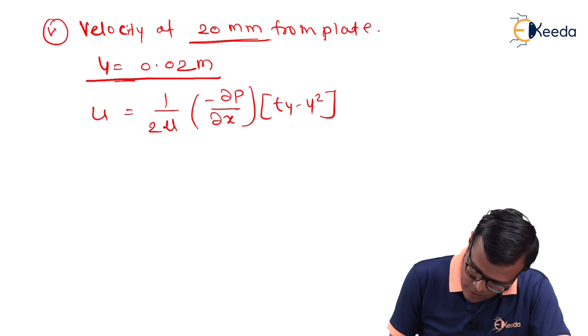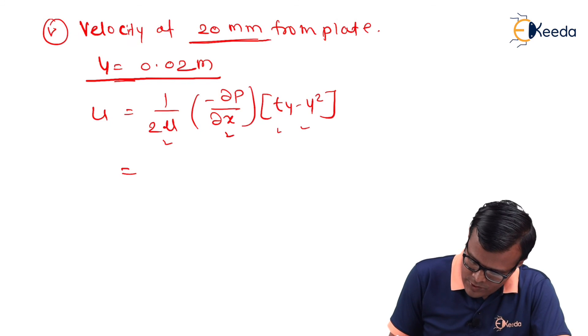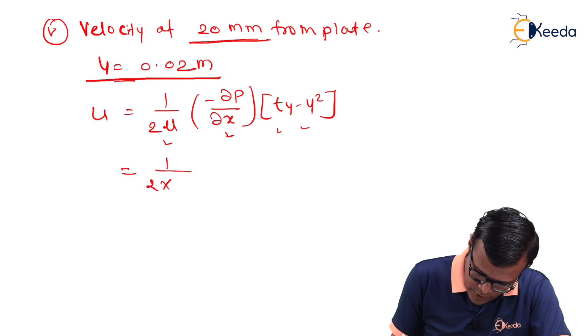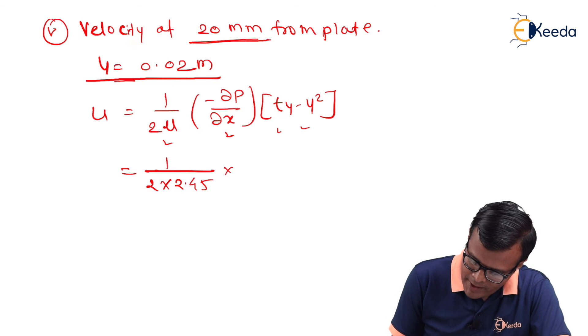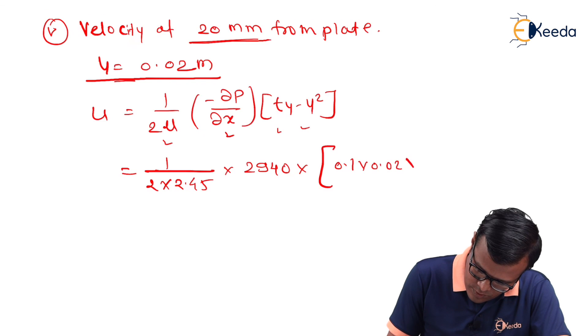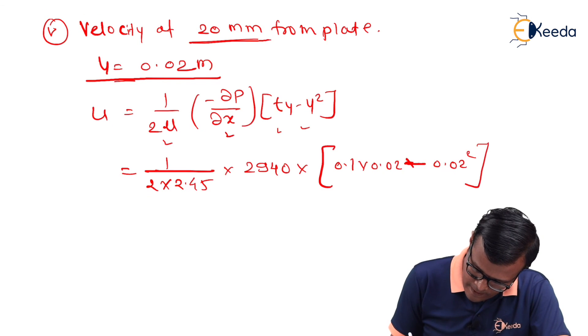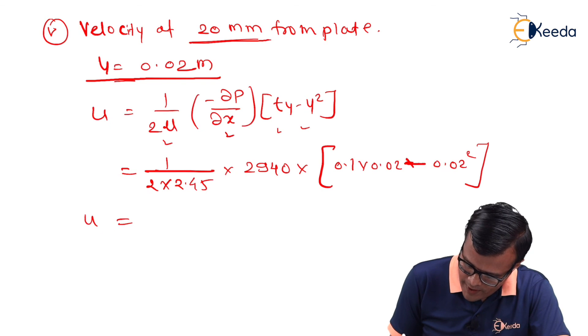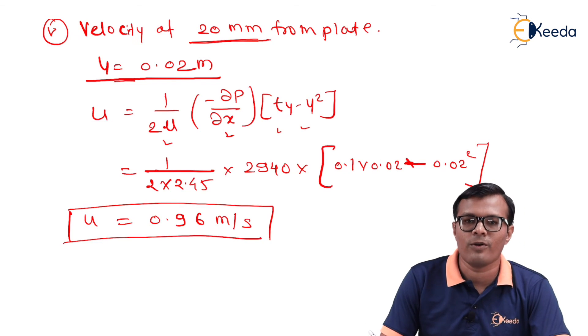Here, we all know the value of μ, dp/dx, t value and y value. So, just putting the values we will have equation as 1/(2 × 2.45) × (-dp/dx) value is 2940 × t is 0.1 × 0.02 - 0.02². It becomes u value as 0.96 meters per second. That's all. Thank you.